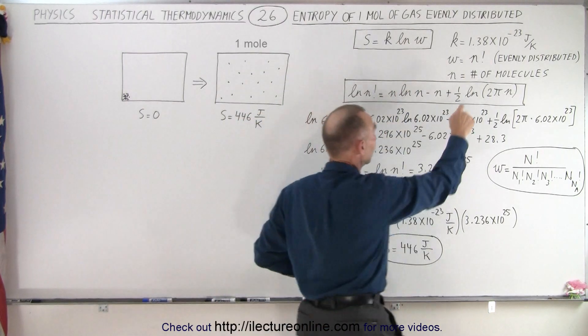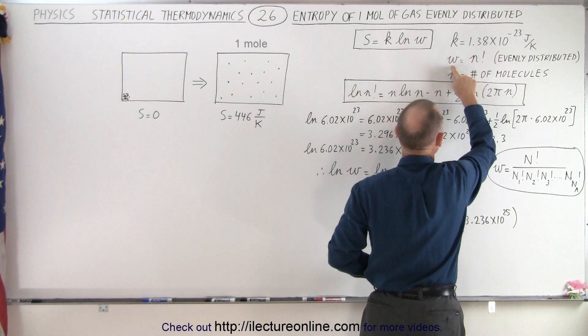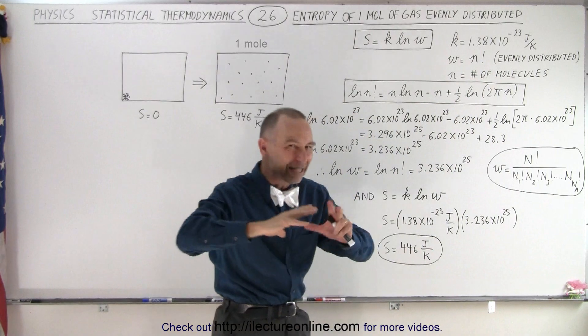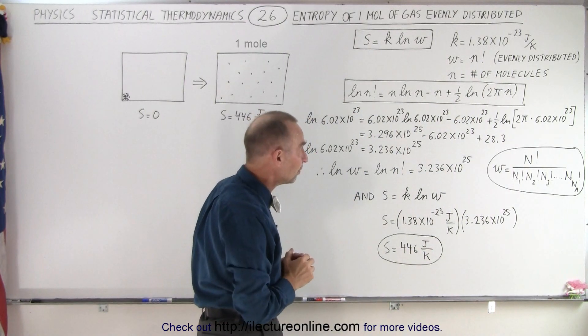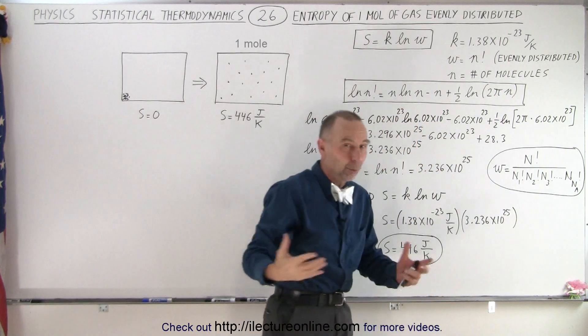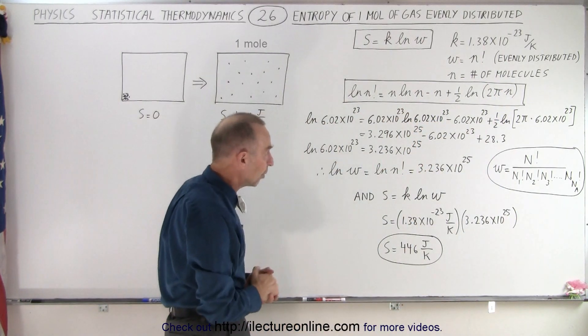So what is k again? Well k is defined right here and w is n factorial. That's only for the evenly distributed situation where n is the number of molecules in the sample. In this case that would be one mole of molecules, Avogadro's number of molecules.